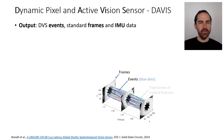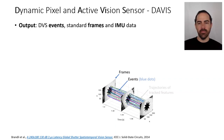The third main design is called the DAVIS — the Dynamic and Active Pixel Vision Sensor — which outputs events, standard frames, and IMU data. Frames come at a constant rate, and they are grayscale frames, though they could also be color. The blue dots represent events. Frames and events are on the same pixel array.